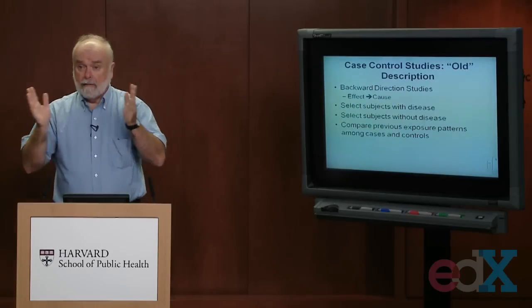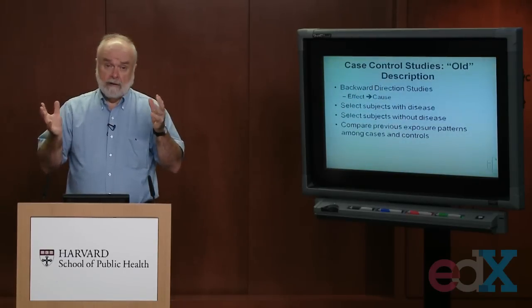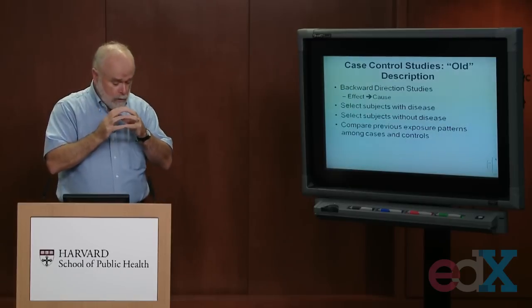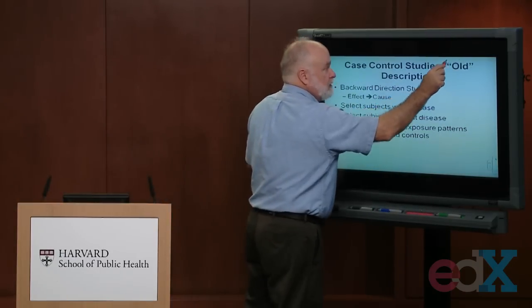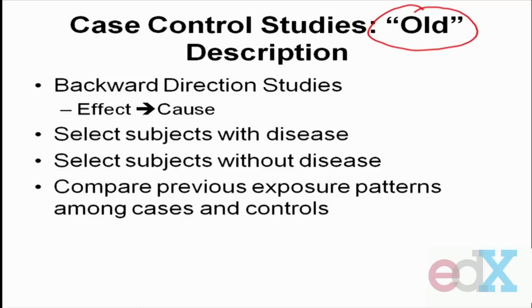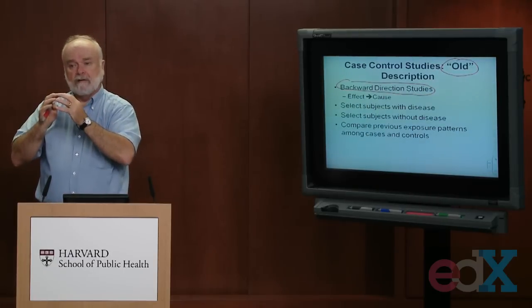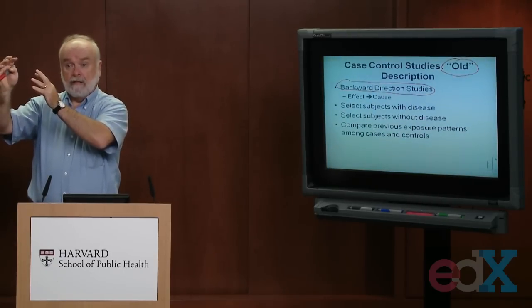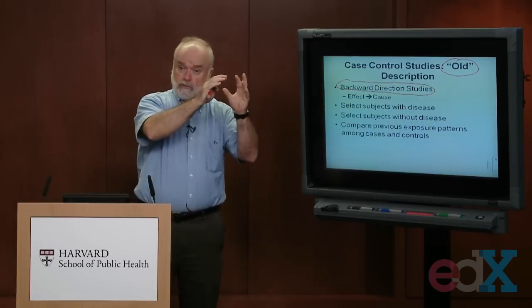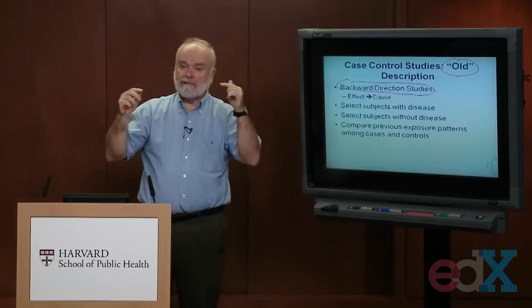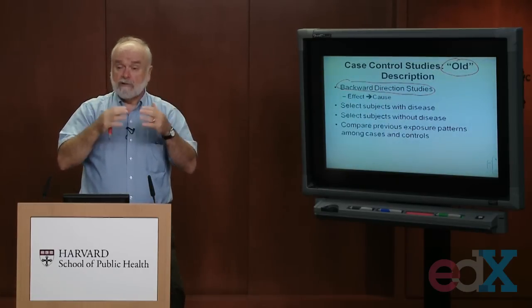In the old description of case control studies — how I learned about them as a student some 30-odd years ago — they are backwards relative to cohort studies; they have a backwards study direction. Cohort studies started with exposed people, like smokers and non-smokers, followed them forward to see who got disease — studying the cause, smoking, to study the effect, say coronary heart disease. In case control studies it's almost the opposite: we start with people who already have heart disease and go back to figure out what the cause was — were they smokers or not?